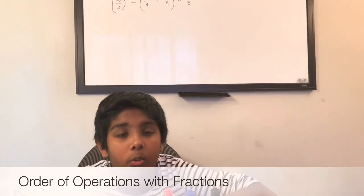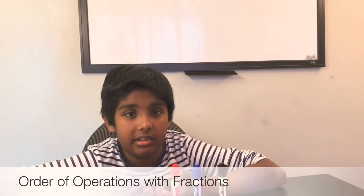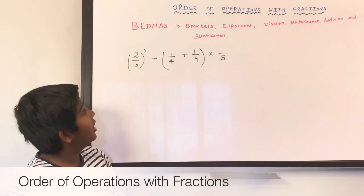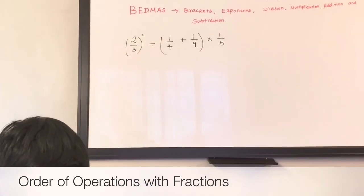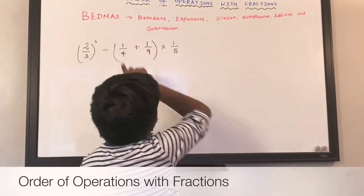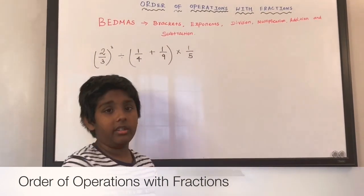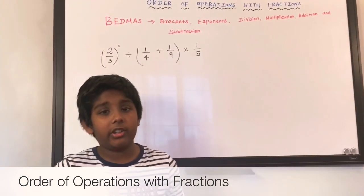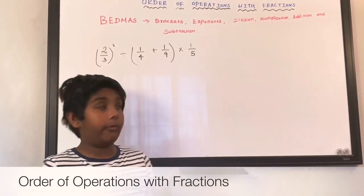So let's refresh — what is order of operations? We call it BEDMAS. The B stands for brackets, the E stands for exponents, the D stands for division, the M stands for multiplication, the A stands for addition, and S stands for subtraction. I taught you order of operations in one of my previous videos, but today we're going to do order of operations with fractions.